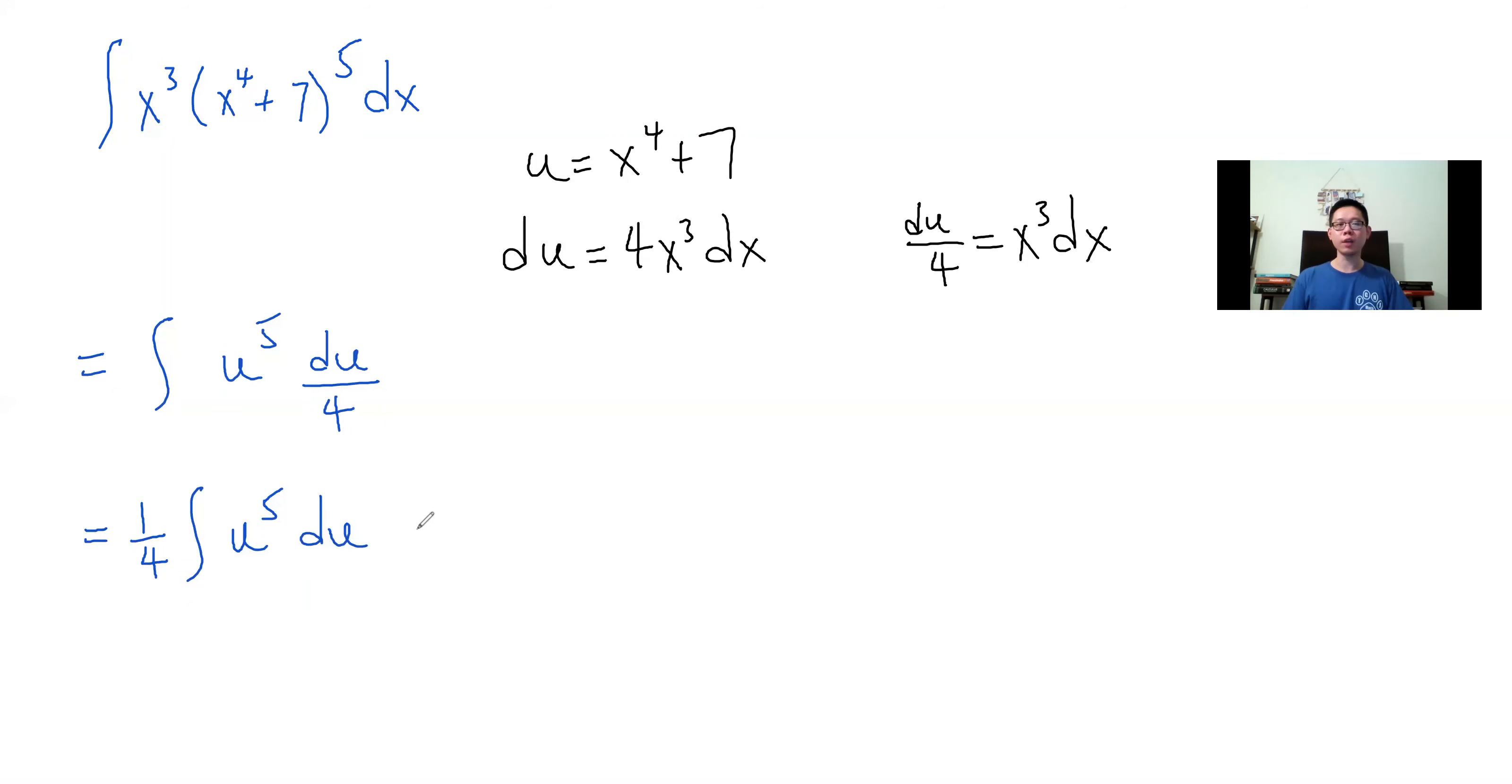And now this is a perfectly fine integral for us to use the power rule on. One fourth, add 1 to the power, u to the sixth divided by 6 plus C. Simplify, u to the sixth divided by 24 plus C.